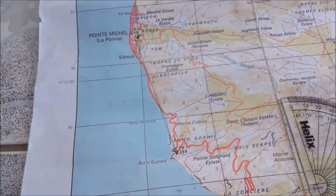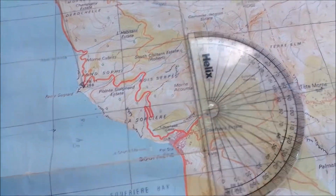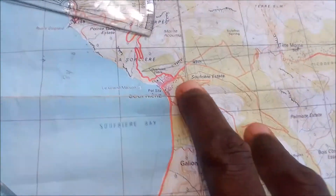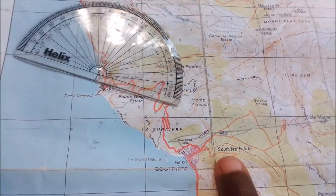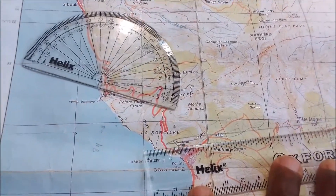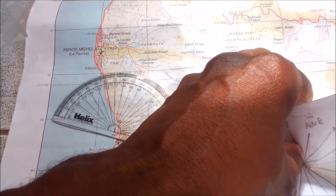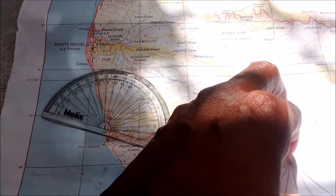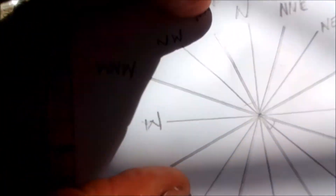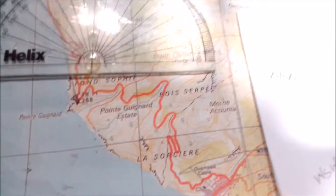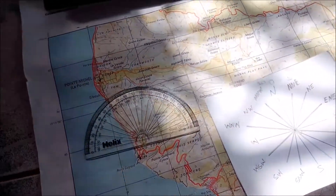Now what if it was the other way around — how would I calculate the bearings and direction? When I say the other way around, I mean from Tetamon school to Sufferer Estate school. The first thing I would do is draw the line again between the two points, get my compass, ensure the middle of the compass is at the exact point. I use the pointed part of the compass and hold it down on the paper. When I look at the line again — let me shift the map a little bit out of the sun.